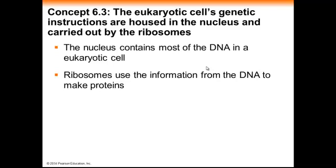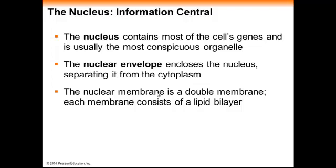We're going to start first with the nucleus, which is where a majority of the cell's DNA is found. We're also going to talk about ribosomes, because they are an integral part of transmitting the genetic information. The nucleus is basically the information center of the cell. It contains most of the cell's genes and is usually the largest and most obvious organelle. It is surrounded by a plasma membrane which forms what's called the nuclear envelope, and what's unique about the nuclear envelope is it is a double membrane, meaning it has two lipid bilayers.